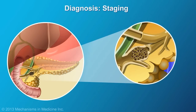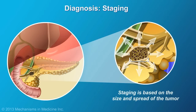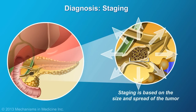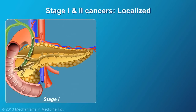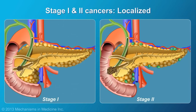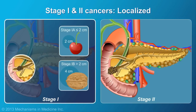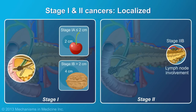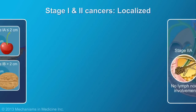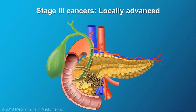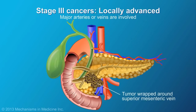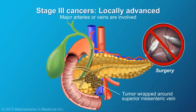Following imaging, the stage of the cancer is determined. This is based on the size of the tumor and whether the disease has spread to nearby structures, mainly blood vessels and organs. Stages 1 and 2 refer to localized disease, which can only be confirmed by pathologic examination after surgery. Stage 1 includes small localized tumors, and stage 2 includes tumors with or without lymph node involvement. In stage 3, the tumor may be wrapped around important arteries and veins, meaning it cannot be removed surgically. This stage is often called locally advanced.